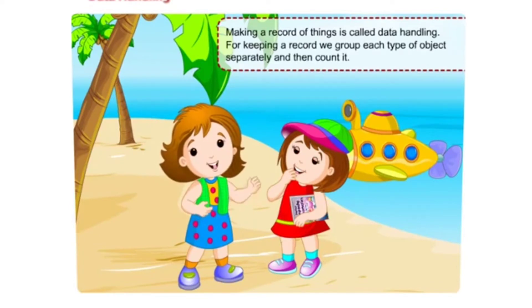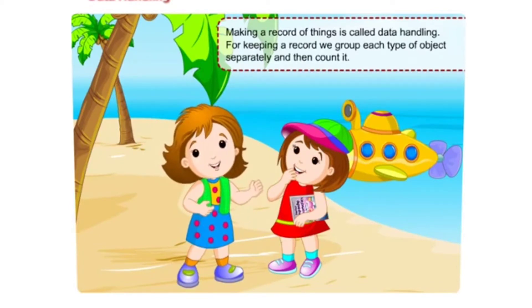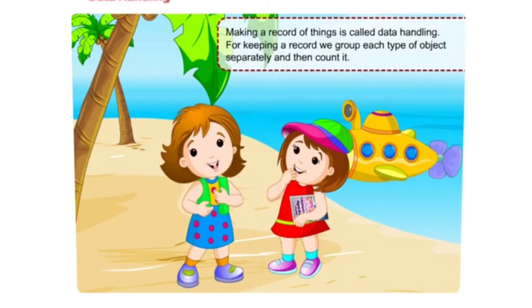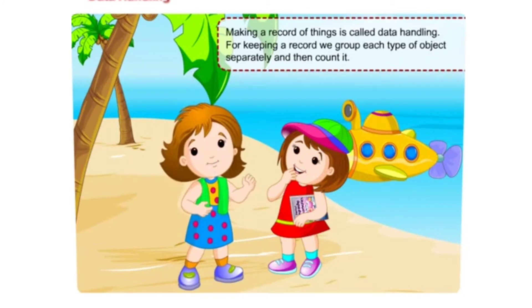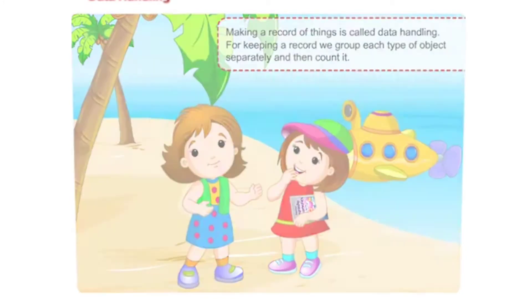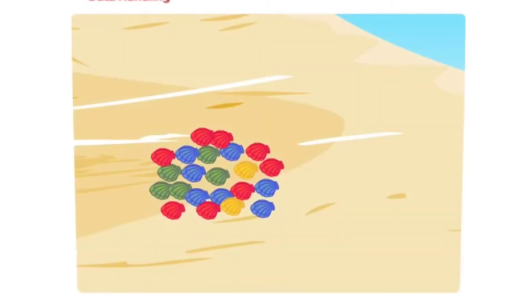For keeping a record, we group each type of object separately and then count it. Here we have four types of shells, so we will make four groups.